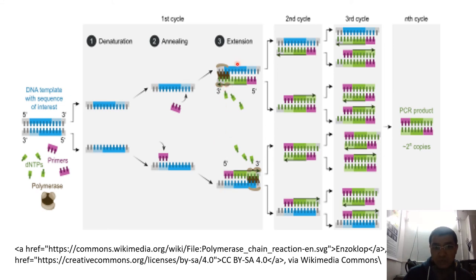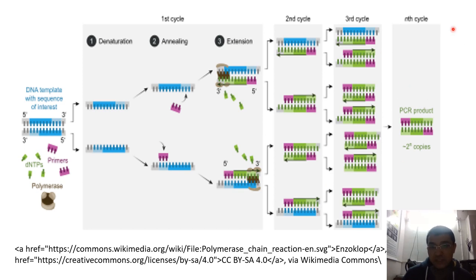In the extension phase, the polymerase enzyme copies the template sequence, so one copy becomes two copies. In the second cycle, two copies become four copies. In the third cycle, the number doubles again. By n cycles — typically around 40 cycles — you will get the PCR product in multiples, producing an exponential amplification of the original DNA molecule.